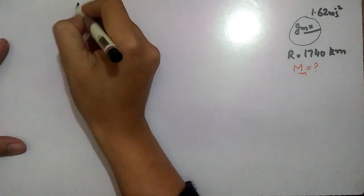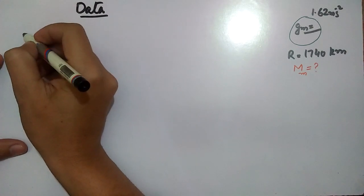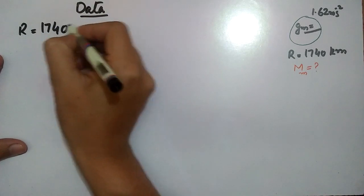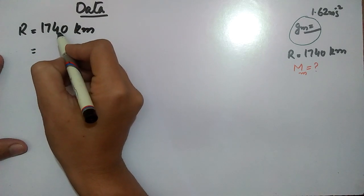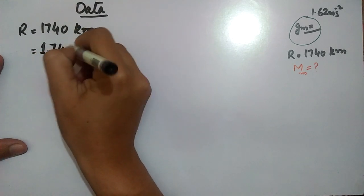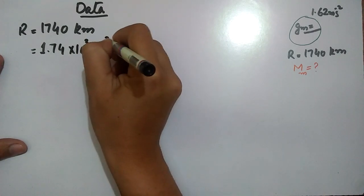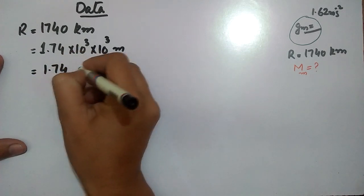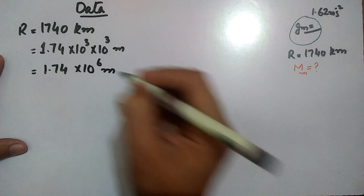First of all, we will write the data. Radius is equal to 1740 kilometer. We have to convert it: 1740 km = 1.74 × 10³, and since kilo means 10³, that gives us 1.74 × 10⁶ meters. The radius is now converted.